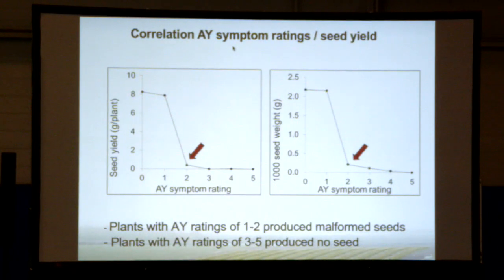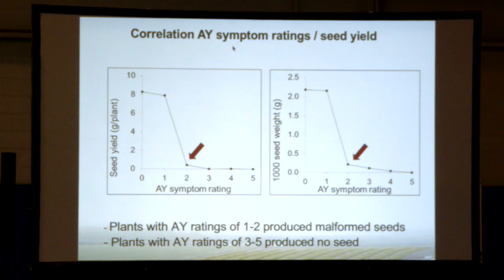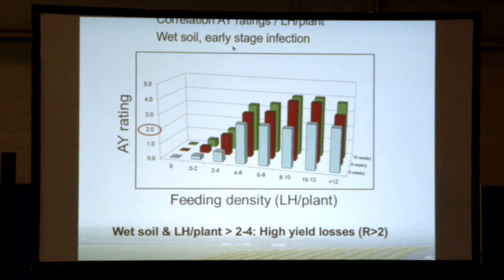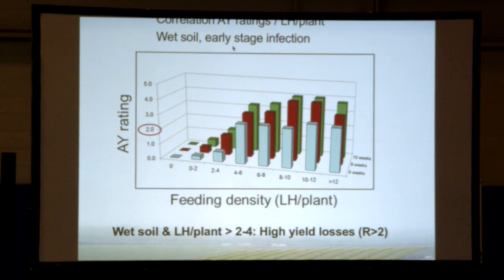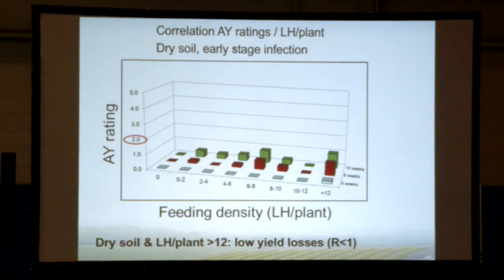Looking at seed yield and 1,000-seed weight per plant: as soon as you reach rating 2 — just a bunch of bladder-like pods at the tips of branches — you have already lost most of the plant's yield, falling below two grams per plant. Comparing wet soil versus dry soil: in wet soil, as few as three to four leafhoppers per plant for ten hours takes you past rating 2, so you have already lost your crop. In dry soil, it's completely different — you can put 16 or even 20 leafhoppers per plant and not even reach rating 1. In dry soil, even if the leafhoppers are infected and feed, you won't get symptoms.